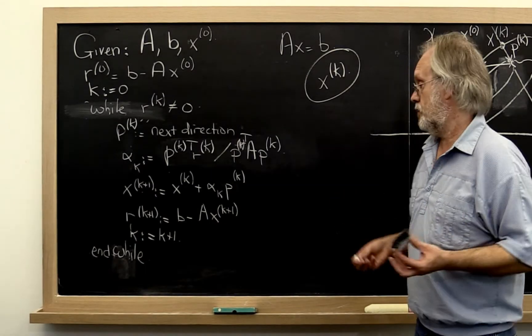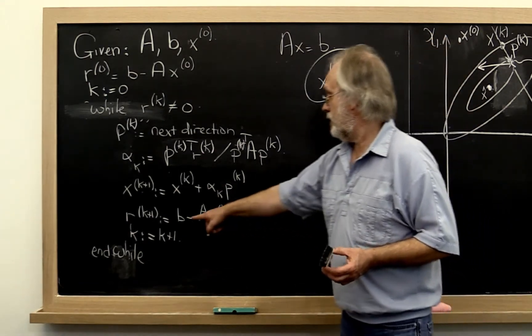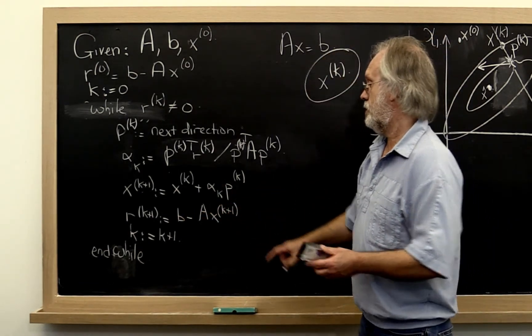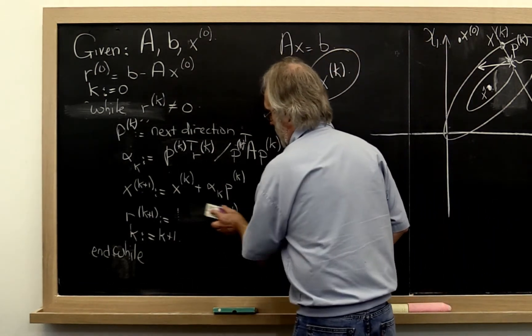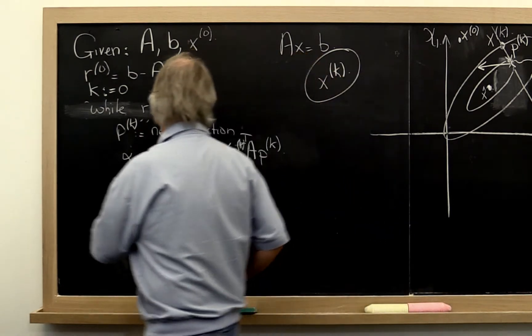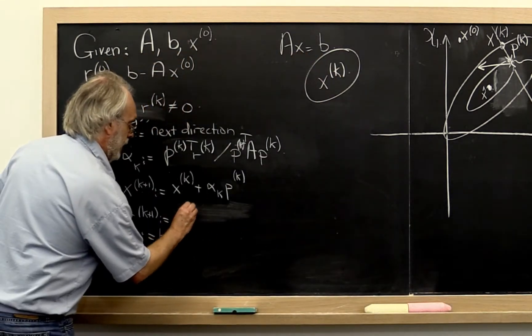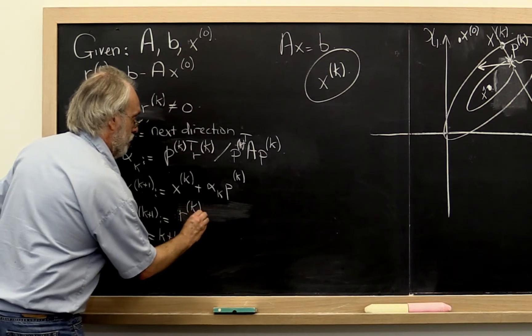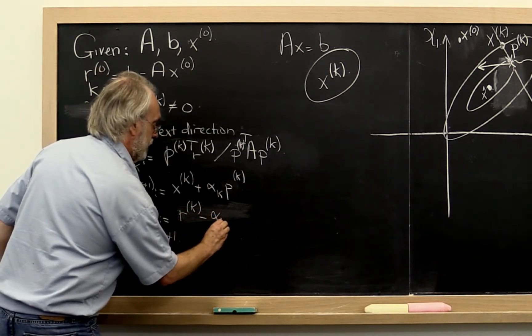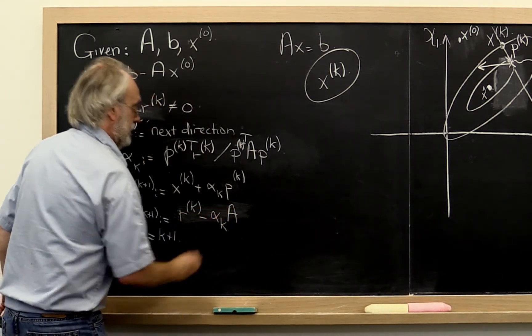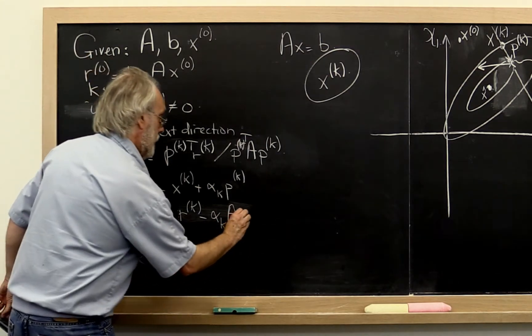So what the last homework showed was that we can replace this expression right here by rk minus alpha k times A times pk.